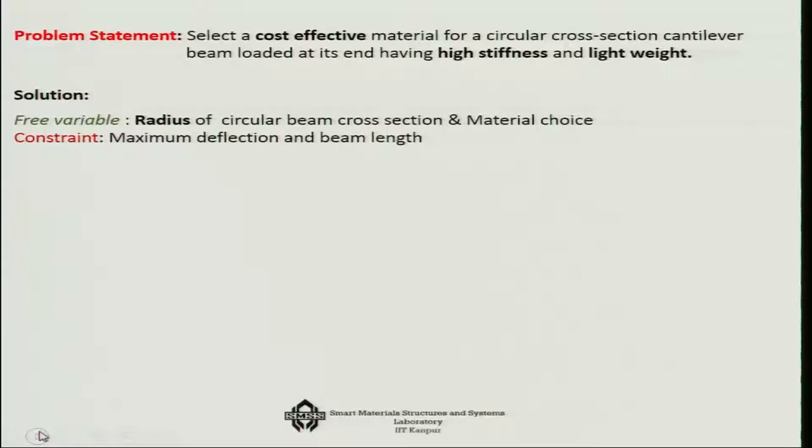Since the length of the span of the cantilever beam is always fixed, what you can play with in the geometry is the radius of the circular beam cross section and the choice of the material. These are the free variables for us and the constraints will be the maximum deflection and the beam length. Let us look into how we can solve such a problem and use our knowledge of materials.